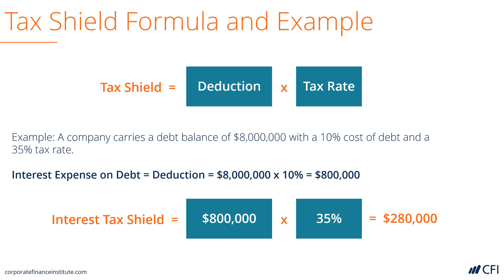The net present value of the tax shield benefit would be equal to the tax shield in each of the years of this bond's life discounted back to the present. Hopefully, this illustrates how companies use tax shields to lower their taxable income and reduce their taxes.